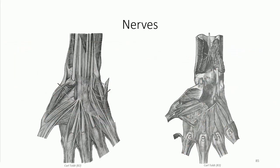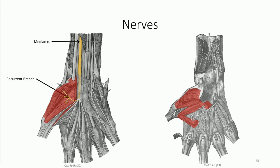We conclude by looking at the nerve supply to the hand. As previously observed, the median nerve passes deep to the carpal tunnel where it is commonly compressed in carpal tunnel syndrome. As it emerges from underneath the tunnel, it provides the recurrent branches to the thenar eminence. The remainder of the nerve projects forward as the common digital branches, similar to the common digital arteries that they run with.